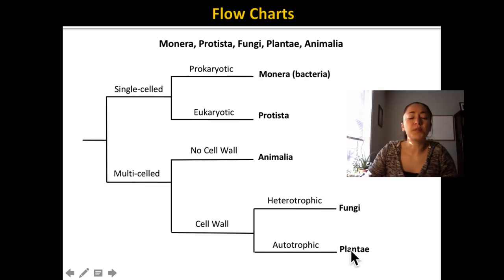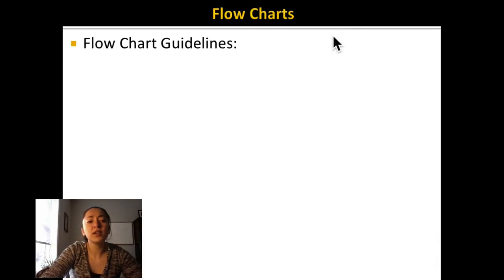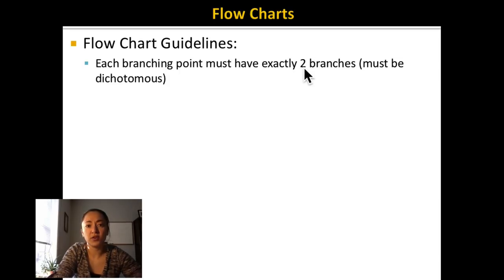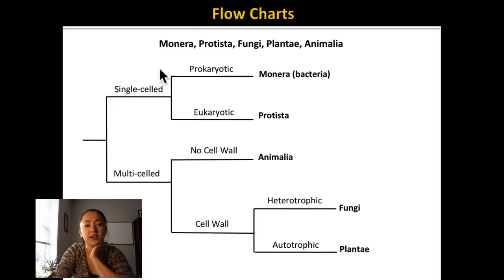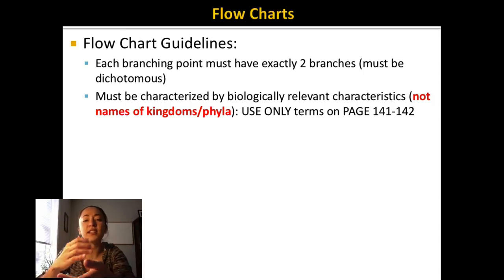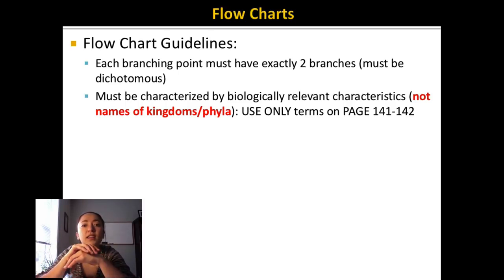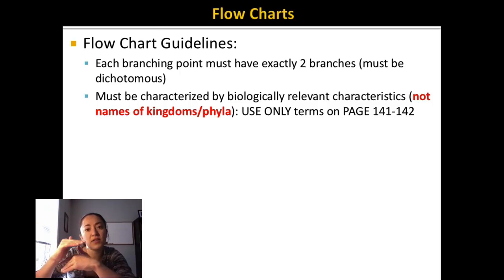Some rules you need to follow when doing flowcharts: each branching point must have exactly two branches — you can see that here, always two branches coming out from each point. Each branch must be characterized by biologically relevant characteristics. You must use the characteristics listed on pages 141 and 142, such as autotrophic, heterotrophic, eukaryotic, prokaryotic, and so forth. One thing you cannot list as a characteristic is the taxonomic names. You cannot say 'this is a plant' or 'this is an animal' to separate things out. You cannot use any kingdom names or phylum names.